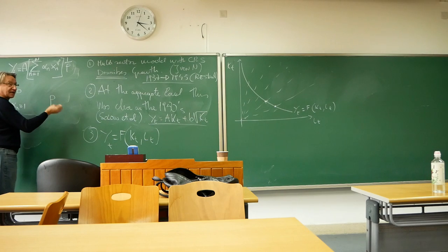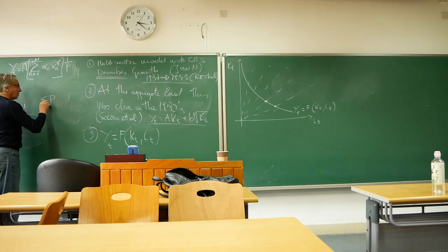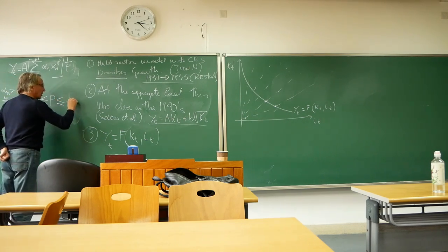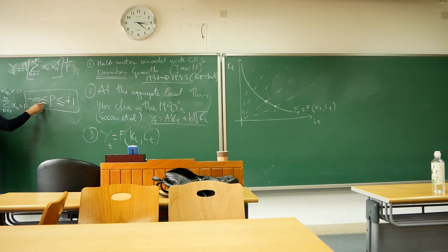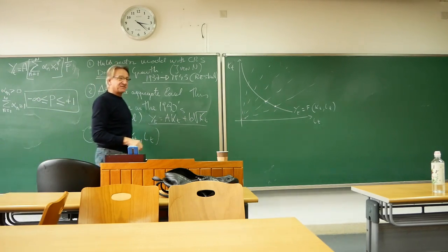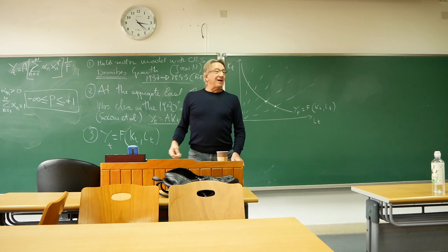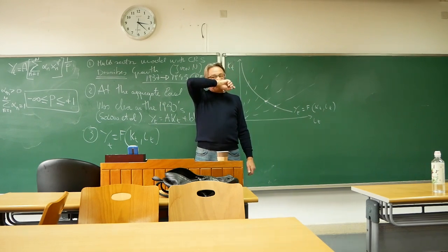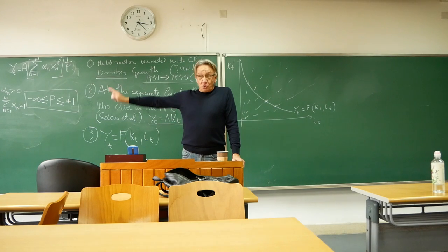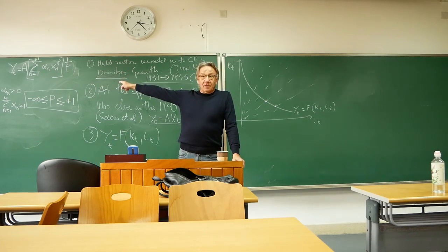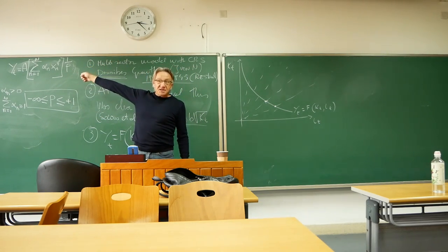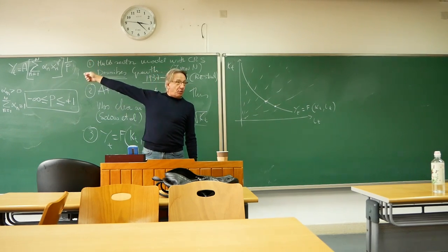And ρ — the key elasticity parameter — is any number greater than or equal to minus infinity and less than or equal to plus one. The mathematician always gets nervous when we write 'equal to minus infinity,' but we know exactly what we mean and we can pass to the limit and study what happens when ρ goes to minus infinity. With those restrictions, this is a concave, monotone increasing, homogeneous degree-one production function, and its representation is a convex cone in ℝ^(N+1), where N is the number of inputs and one is the output.